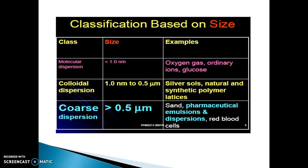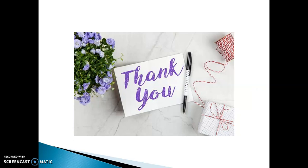This is the comparative account of the various types of dispersion with examples. We mainly classify dispersion into three types — molecular dispersion, colloidal dispersion, and coarse dispersion — according to the particle size of the dispersed phase. Thank you very much for your patient listening. If you have any query, you can comment, and do subscribe to my channel. Happy learning!